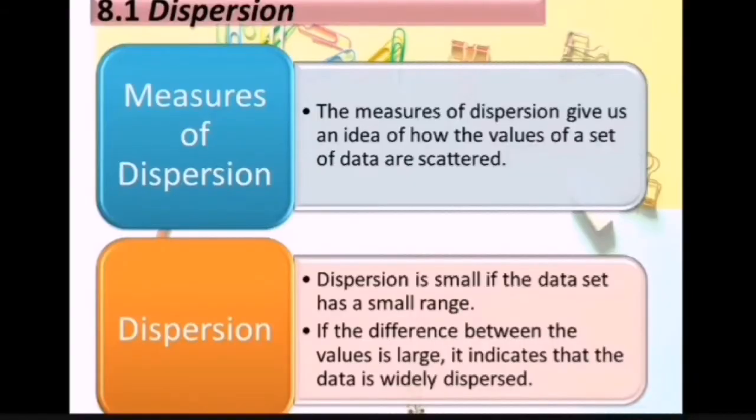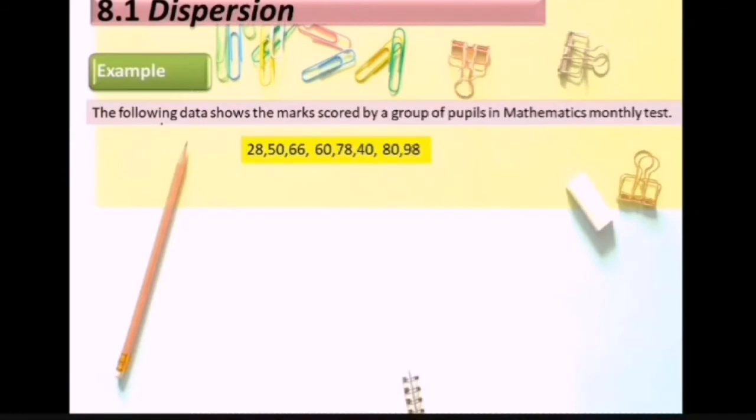To understand better, let us look at the following example. The following data shows the marks scored by a group of pupils in mathematics monthly tests. The difference in marks is equal to highest mark minus lowest mark. So the highest mark is 98, and the lowest mark is 28.